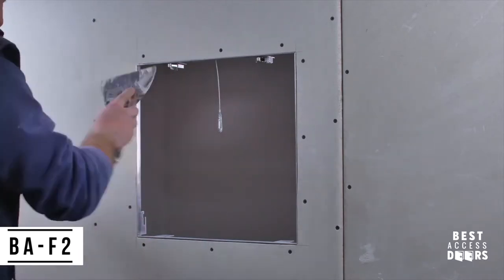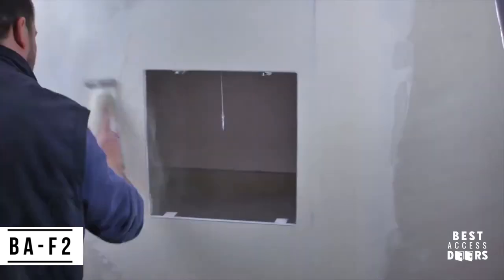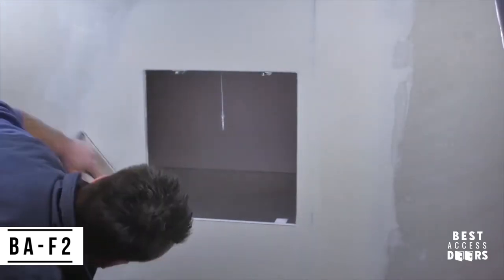Prepare drywall compound, then apply it directly around perimeter. Once dry, sand smooth.